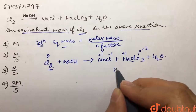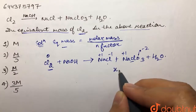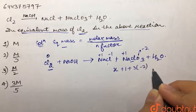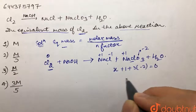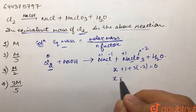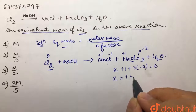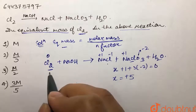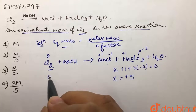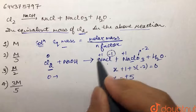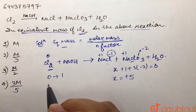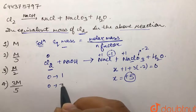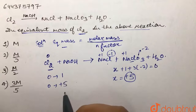In NaClO₃, sodium is +1 and each oxygen is -2, so for chlorine (let it be x): x + 1 + 3(-2) = 0, giving x = +5. So chlorine goes from 0 to -1, and from 0 to +5.